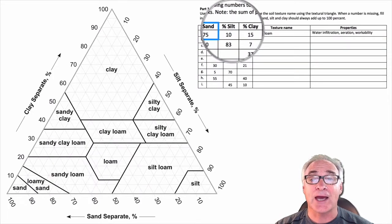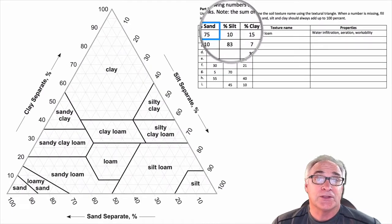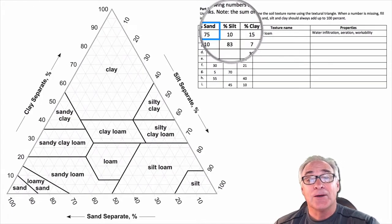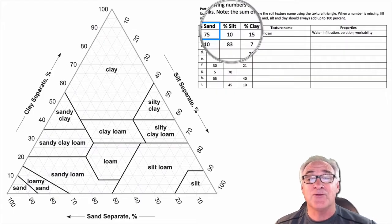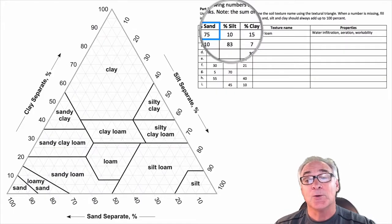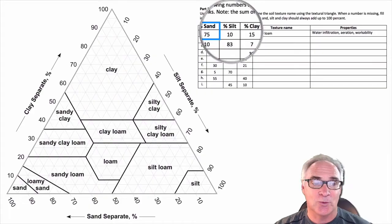If you look at it, all three of those should equal 100. If they don't, then there's something flawed with the sample and how it was calculated. So 75% sand plus 10% silt is 85% between those two soil separates. When we take a look at percent clay, that's 15. 15 plus 85 is 100 — that's how it should work.